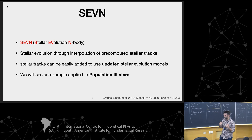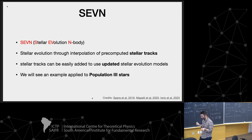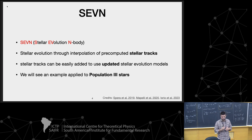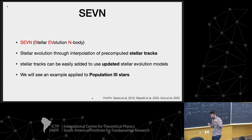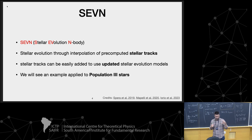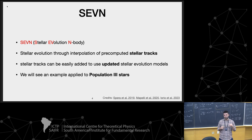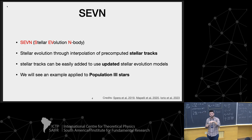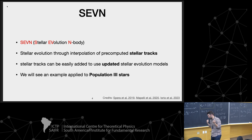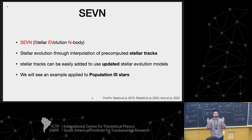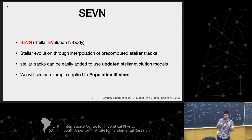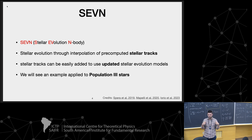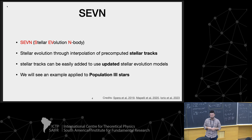There are several population synthesis codes. The one developed in Padova is called SEVN, which stands for Stellar EVolution and N-body. SEVN is particularly interesting because it uses pre-computed stellar tracks rather than fitting formulas. What we can do in SEVN is update stellar evolution models — for example, follow the evolution of rotating stars. We can evolve stellar tracks in codes like PARSEC and use those tracks in SEVN, allowing us to explore another piece of the parameter space on single stellar evolution.